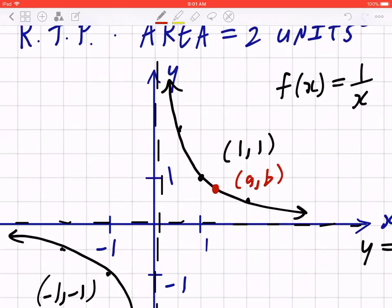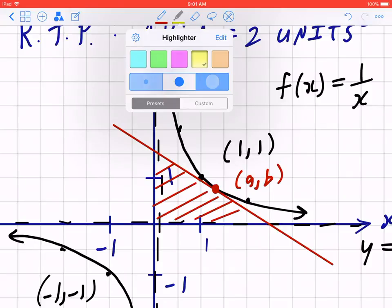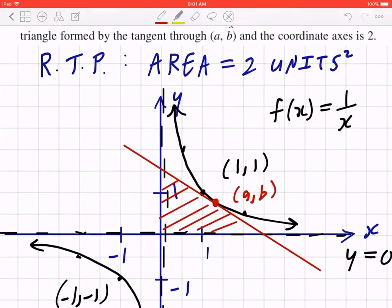And what they're really asking is the following. If I draw a straight line such that it is tangent to (a, b), the area, this area, is going to be exactly 2 units squared. So that's what they're asking. I'm going to show this to you step by step.